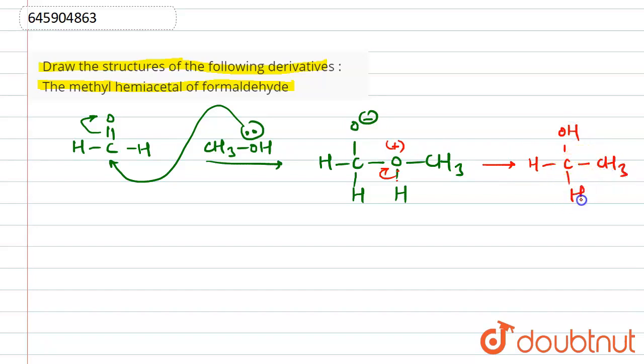The concept of hemiacetal is that it should be derived from the aldehyde, and in that one carbon, one OH group and one ether group - sorry, here OCH3 will be there - so one ether group and one alcohol should be present on the single carbon. So that will be called as hemiacetal of formaldehyde.